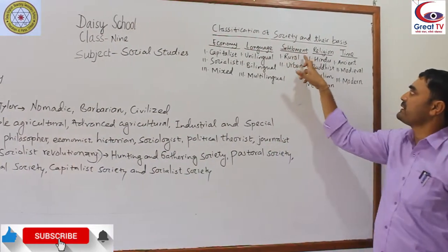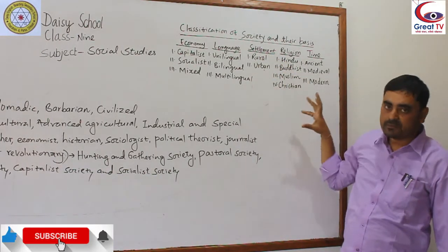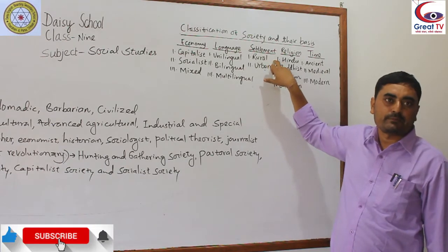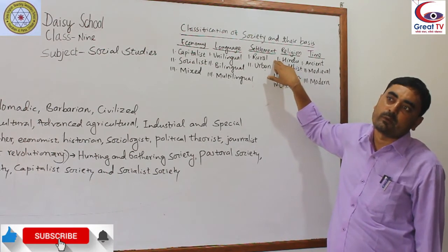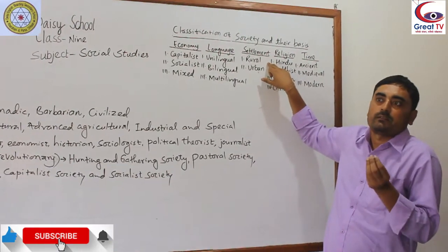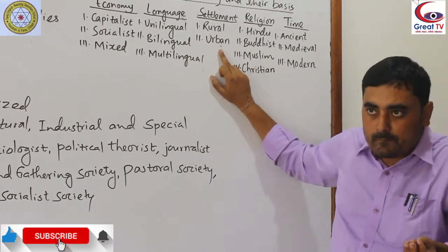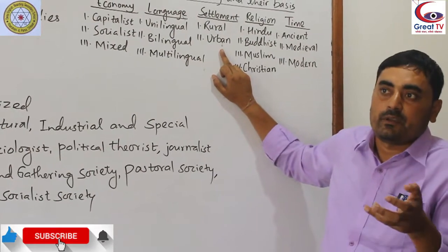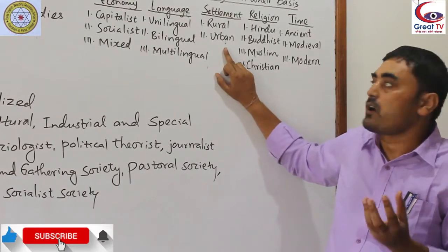On the basis of settlement area — where people live — society can be categorized as rural society or urban society. Rural society is where people have a simple life, especially dependent on agriculture and away from the influence of modernism. Urban society is advanced, facilitated with all kinds of modern amenities and facilities, where educated, skilled, and civilized people live.